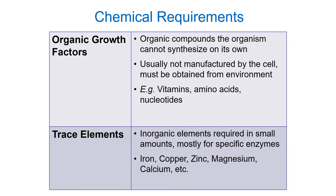Most organisms require specific compounds they cannot manufacture themselves. For instance, we require essential amino acids we can't make in our body — the same is true for microbes, though it differs from microbe to microbe. They may require specific amino acids, nucleotides, vitamins, and trace elements — iron, copper, zinc, magnesium, calcium — needed in very small amounts but essential to cell functioning.